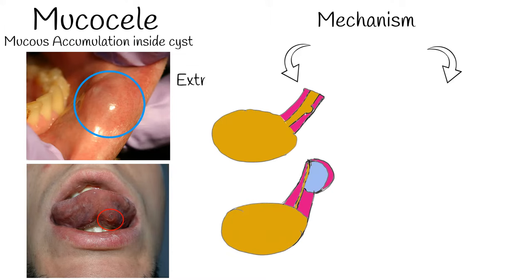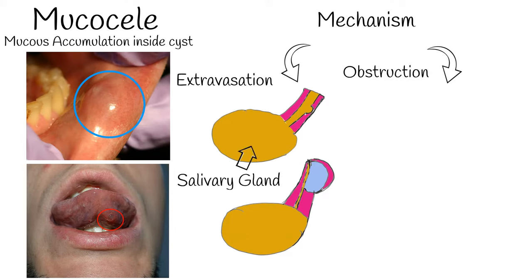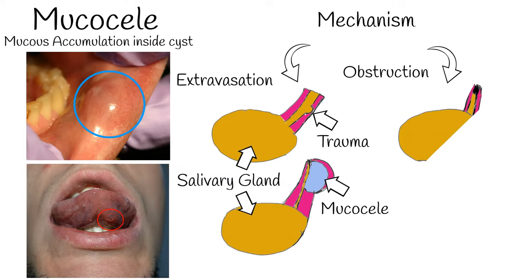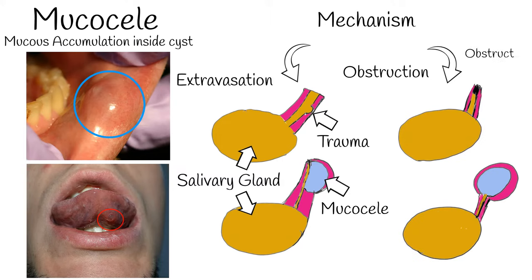Two main mechanisms exist. First, extravasation due to trauma of the salivary duct and mucus building inside the duct. Second, obstruction of the salivary gland duct. Structurally, a mucocele is more of a polyp than a cyst because it lacks an epithelial lining, but the name cyst is still used.